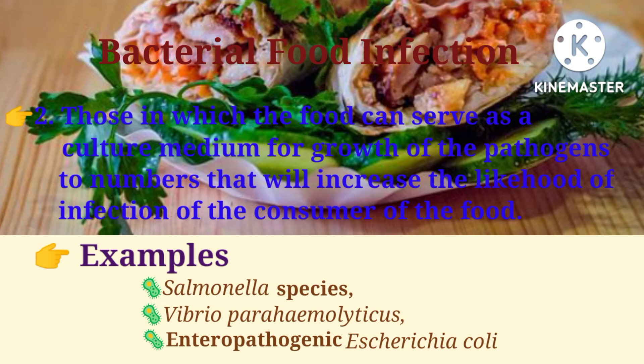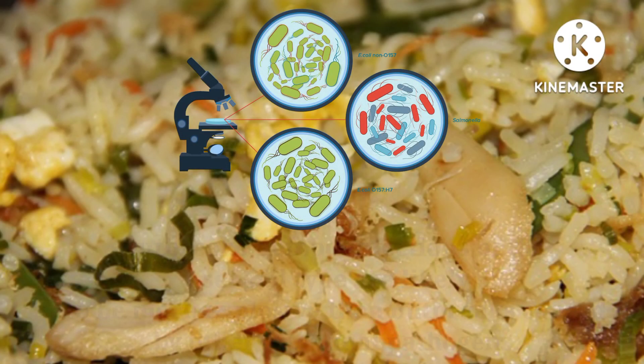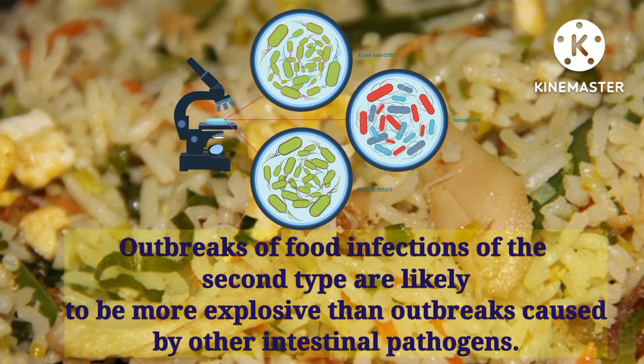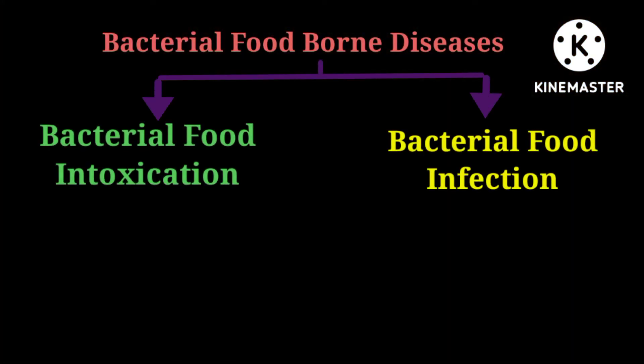Examples of the second type include Salmonella species, Vibrio parahaemolyticus, and enteropathogenic Escherichia coli. Outbreaks of food infections of the second type are likely to be more explosive than outbreaks caused by other intestinal pathogens.